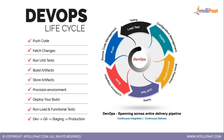As you can see, every phase has a 'continuous' aspect — meaning that in each and every cycle of DevOps there is communication between the development team and operations team to understand whether things are correct, gather any feedback, and make changes.